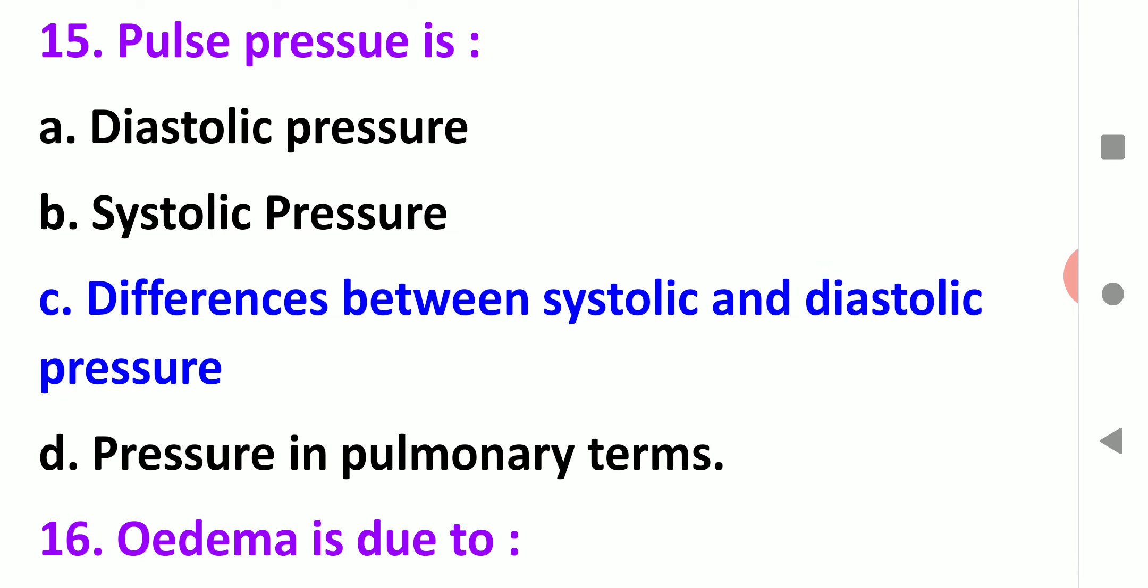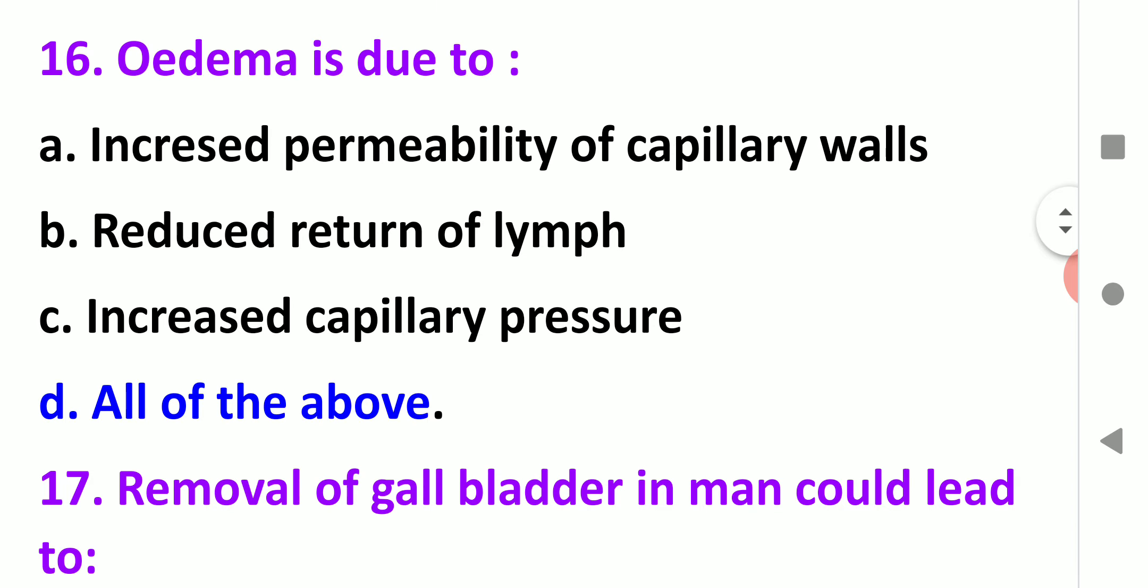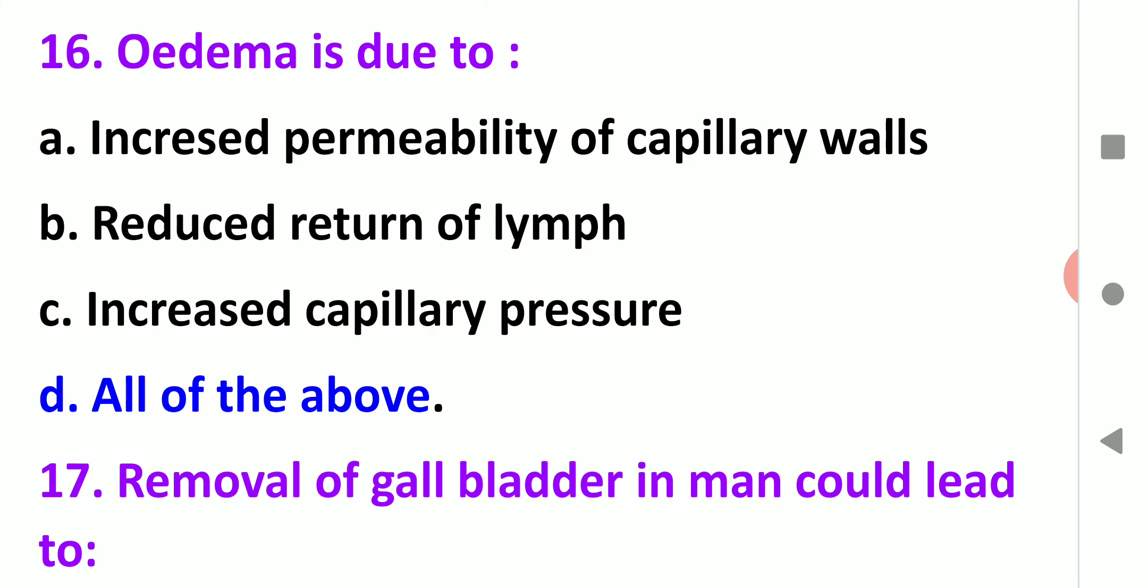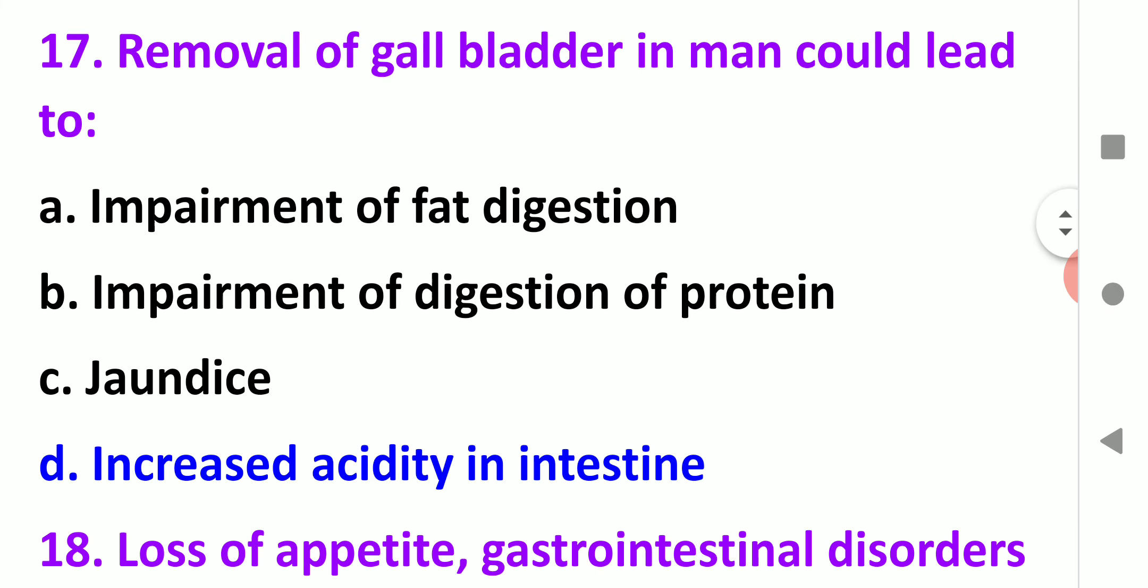Next, pulse pressure is the difference between systolic and diastolic pressure. Next, edema is due to increased permeability of capillary walls, reduced return of lymph, increased capillary pressure. So the answer is all of the above.